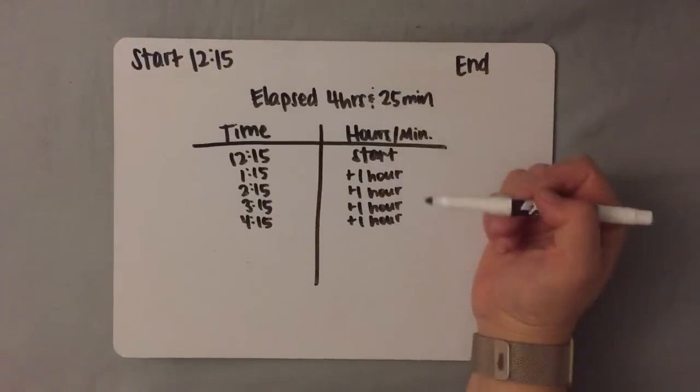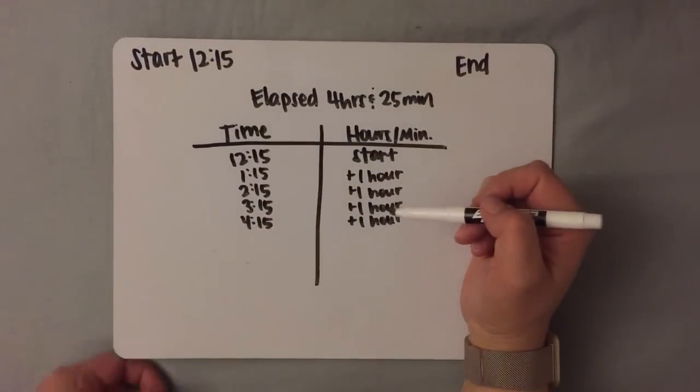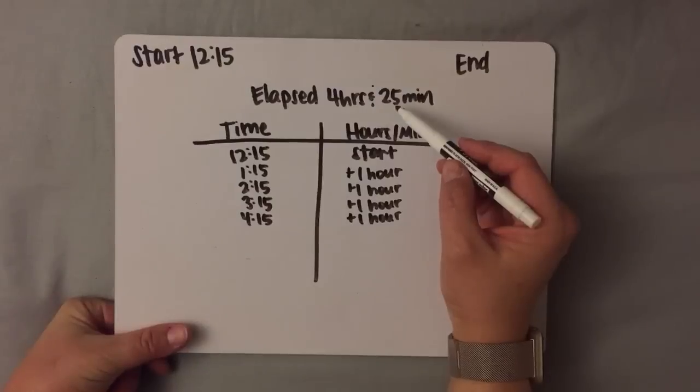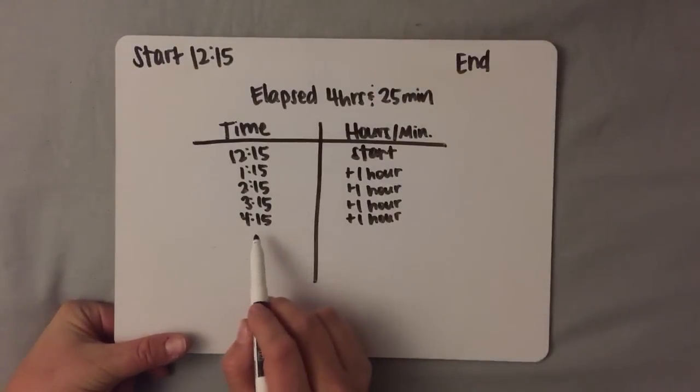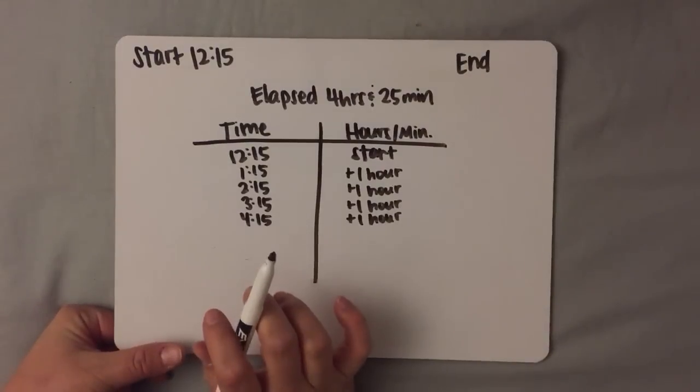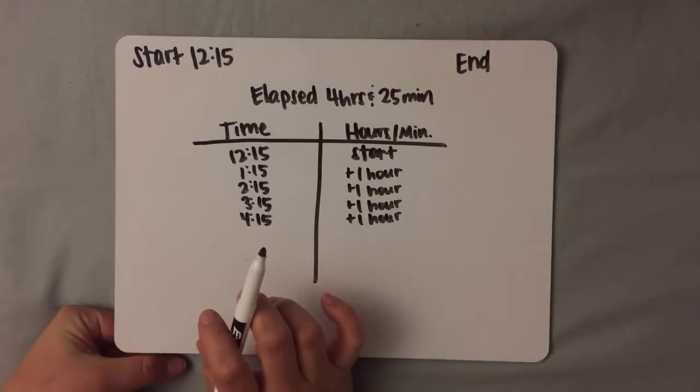Right now, I've added 4 hours, just like the elapsed time I've been given. So now I want to add 25 minutes. However, it's not so easy to add 25 minutes to 4:15. I'm going to break it down, and it's easy to break down hours into 5-minute chunks and also quarter hours or 15-minute chunks.